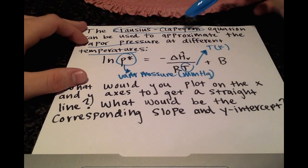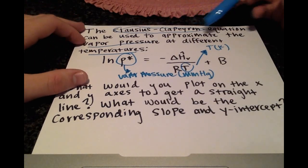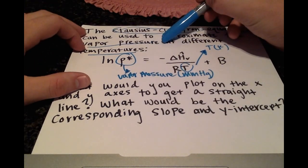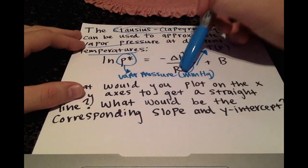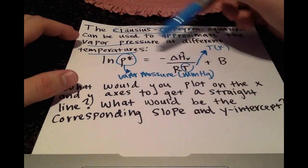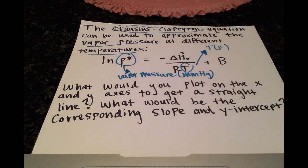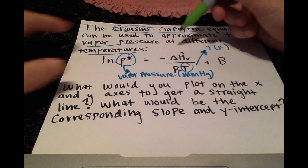And this should be a big clue. They told us that this equation is used to correlate vapor pressure at different temperatures. So I'm guessing that these are the two unknowns, and usually everything else will be constant. So that's exactly right.